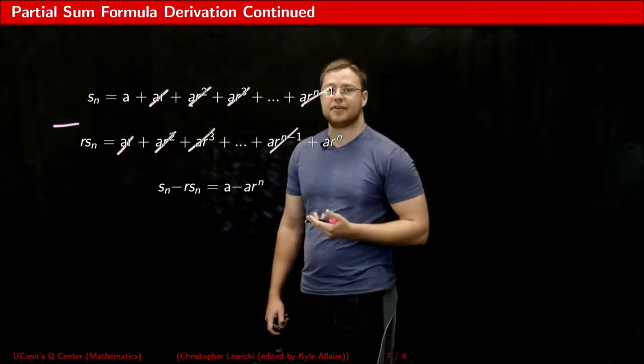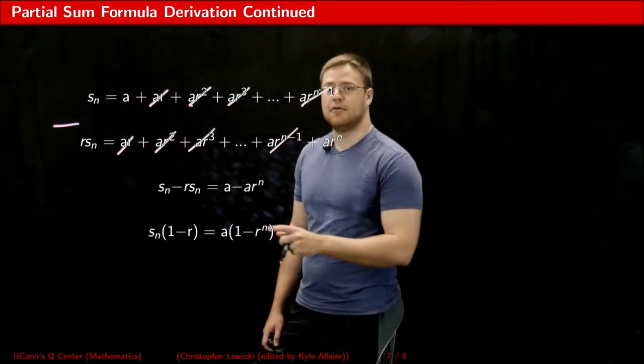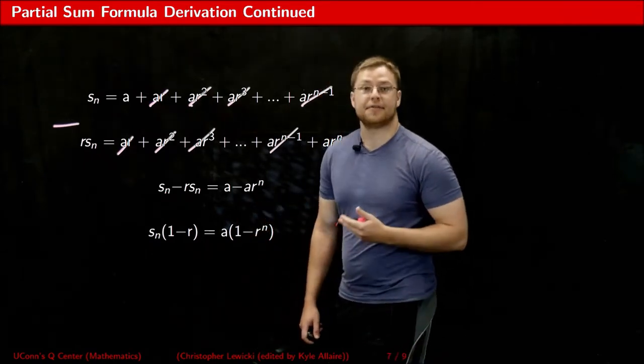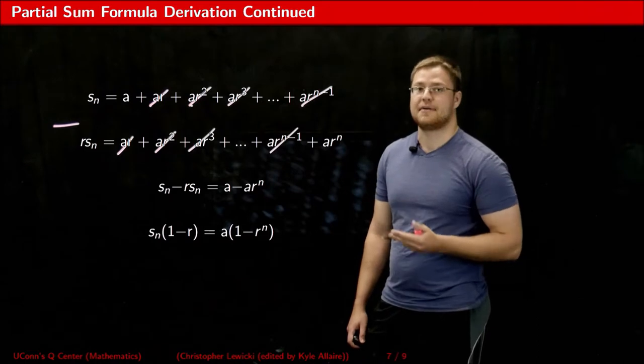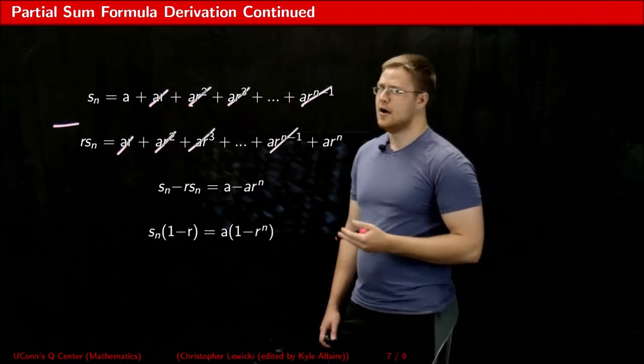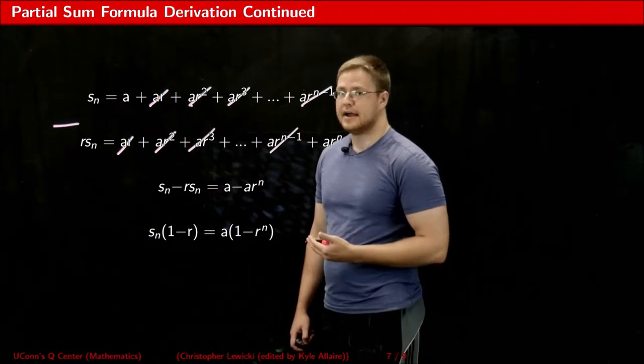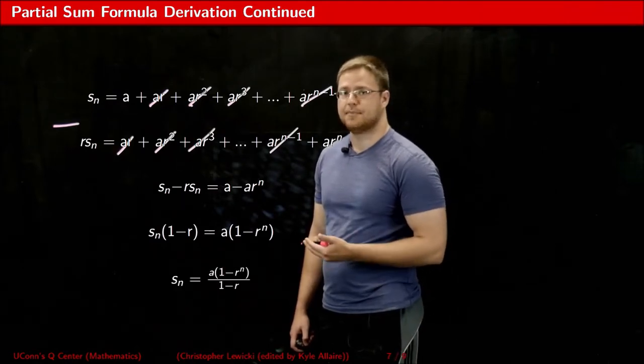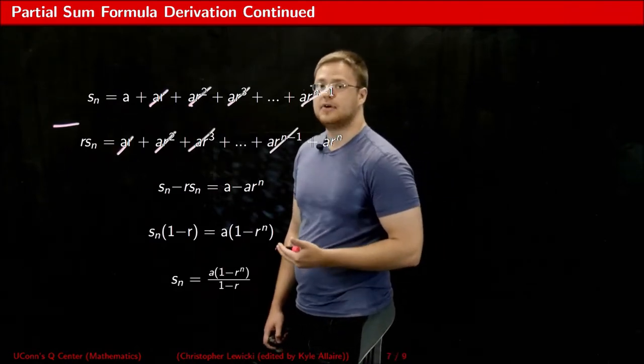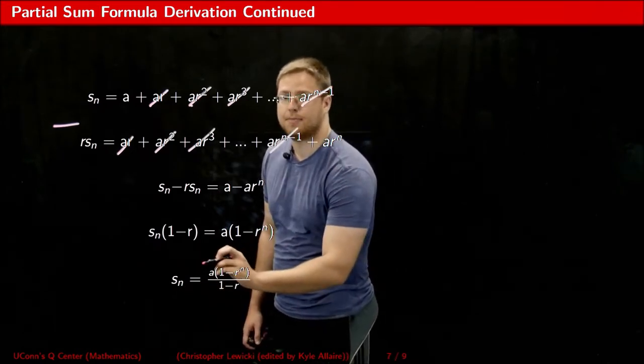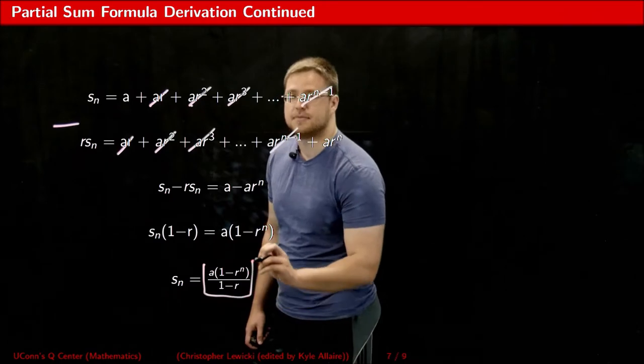In fact, when I subtract the two of these together, all we have left over is the A and the AR raised to N, because these are the only terms that don't have something to cancel out with. When I then factor out what I can from both sides of the equation, I could divide both sides by one minus R, and what I now have is the formula for calculating the Nth partial sum of any geometric series.